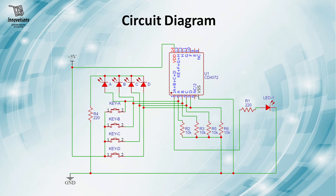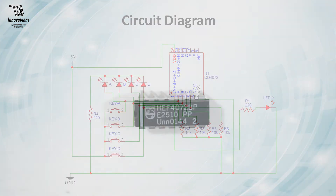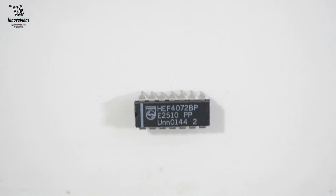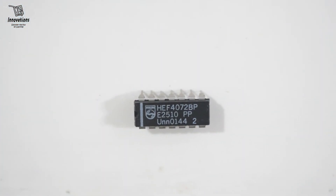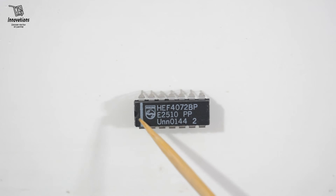If you want to see the explanation and the basic function of an OR gate please visit my previous video. I will give the link in the I button and in the description. Here you can see this is the CD4072 IC and this is the notch at the left side.